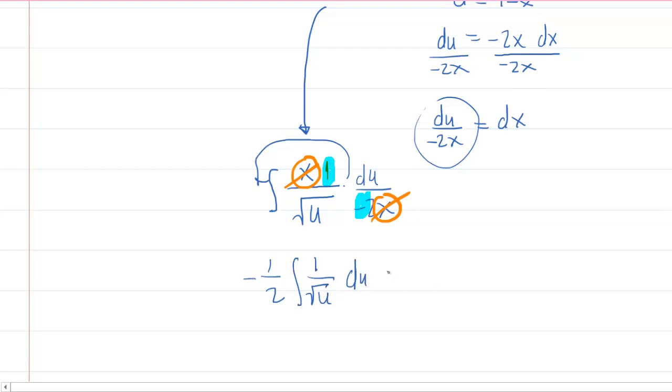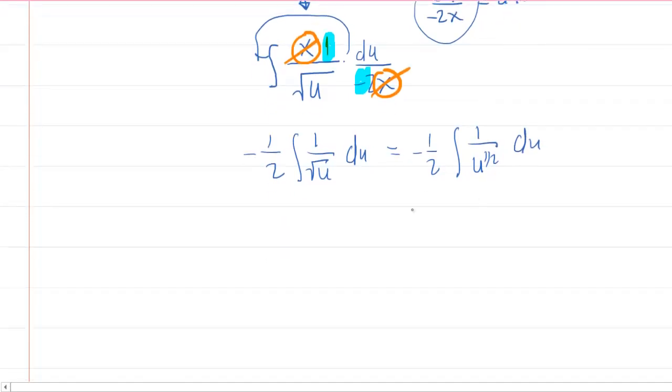That square root of u was indeed in the denominator. But let's rewrite the 1 over the square root of u. Recall that the square root of u can be written as u to the half. And then furthermore, recall that 1 over u to the half can be rewritten as u to the negative 1 half.